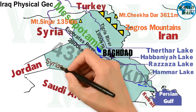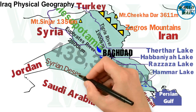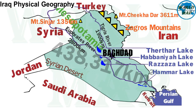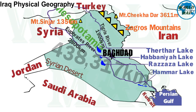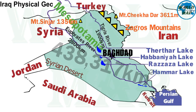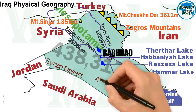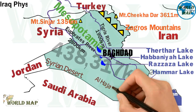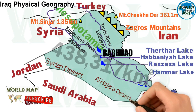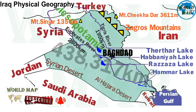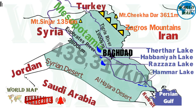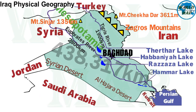The Syrian desert is a region of desert, semi-desert, and steppe covering 500,000 square kilometers of the Middle East, including parts of southeastern Syria, northeastern Jordan, northern Saudi Arabia, and western Iraq. The southern desert is known as al-Hajra in the western part and al-Dibdibba in the east. Both deserts are part of the Arabian desert.